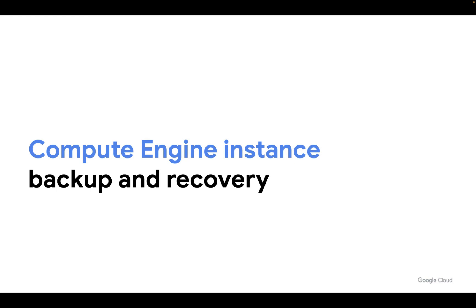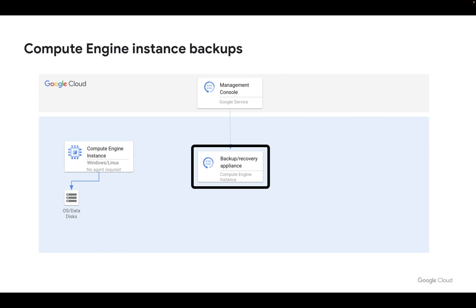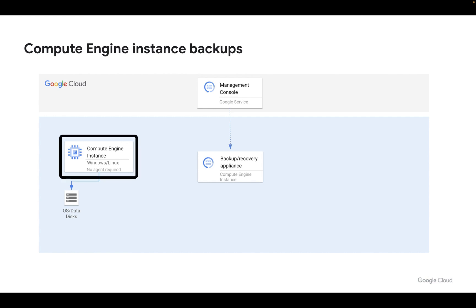Let's talk about how we create Compute Engine instance backups using Google Cloud Backup and DR. We've deployed our Google Cloud Backup and DR service. We've got a management console, we've got a backup and recovery appliance, and we've got a whole bunch of Compute Engine instances for which we need to create backups. What do we do?